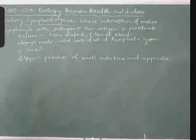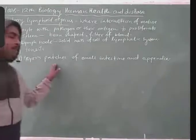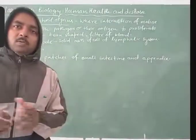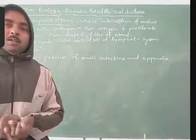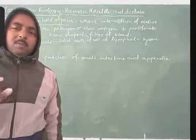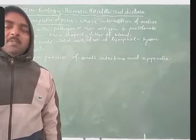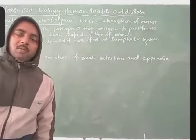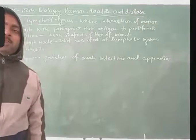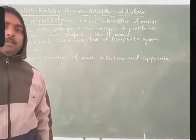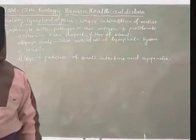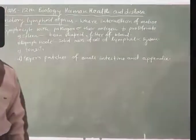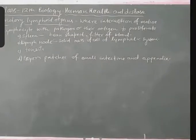The next is Peyer's patches. Peyer's patches are a group of cells — a type of tissue known as a lymphoid organ. They are found in small patches in the mucous membrane of the small intestine as well as the appendix. They are cells of the lymphoid tissue, which is secondary lymphoid.